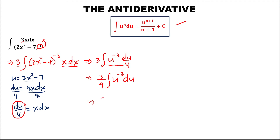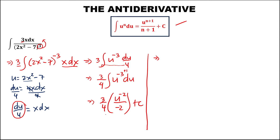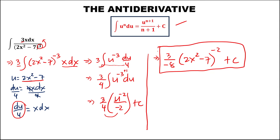Applying the formula: add 1 to the exponent — negative 3 plus 1 gives u to the power negative 2, over negative 2, plus c. To simplify: multiply 4 and negative 2, giving 3 over negative 8, times u — and u is (2x squared minus 7) to the power negative 2 — plus c. This is now the antiderivative.